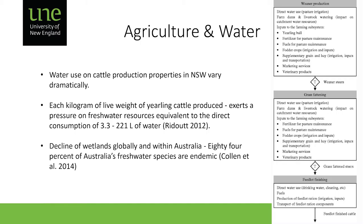Water use on cattle properties in New South Wales varies dramatically. Studies have found a giant range: for each kilogram of live weight of yearling cattle produced, the pressure on freshwater resources is equivalent to direct consumption of somewhere between 3.3 and over 200 litres of water, depending on the property.